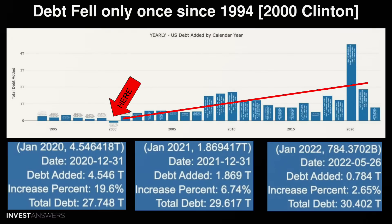This is the actual debt profile over the last 30 years. There's a small arrow pointing to the year 2000 — the only year in the last 30 where debt actually fell, i.e., no debt was added to the US economy. I believe that was under the Clinton presidency. In fiscal year 2020, 4.5 trillion was added; 2021, about 1.86 trillion; and so far this year, 0.784 trillion — and this year isn't even halfway over.